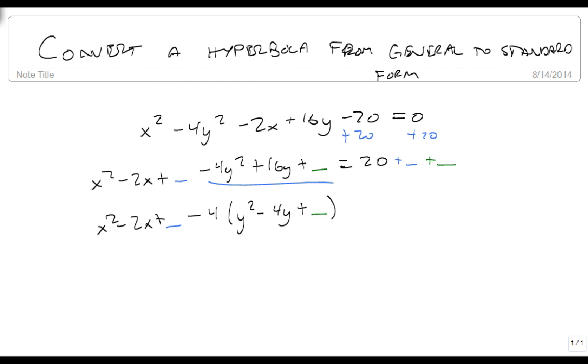And since I pulled a minus 4 out of it, I need to plug in a minus 4. So this blank stays the same, but now I'm going to get a minus 4 times blank. So notice that this number matches whatever is in front of my y squared.